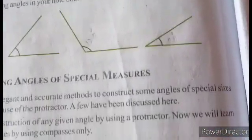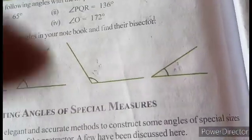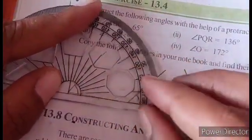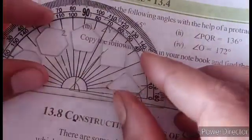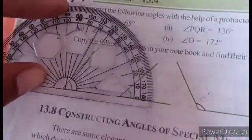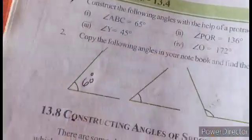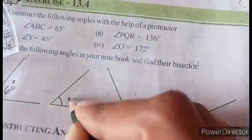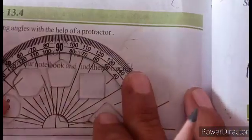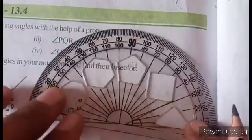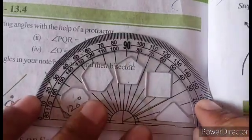First one — how many degrees? First one is exactly 60 degrees. Next one is 50 degrees. Next, 120 degrees. Next, 30 degrees.